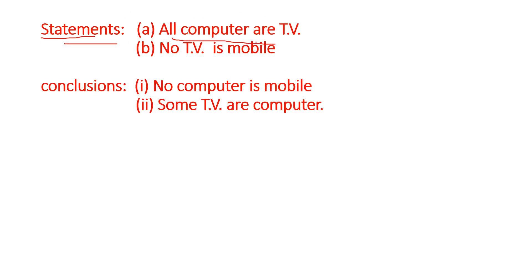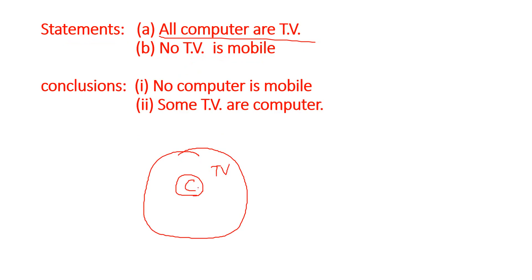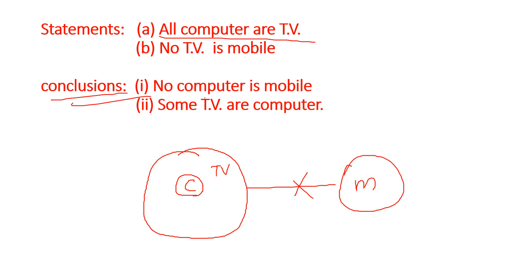Statements are given: All computers are TV; No TV is mobile. First let's draw a Venn diagram. All computers are TV means computers are entirely inside TV. No TV is mobile means TV and mobile have no overlap. Using syllogism rules — already covered in Anacademy and YouTube channel — the first conclusion: No computer is mobile. Is this correct? Since all computers are inside TV, and no TV is mobile, therefore no computer is mobile. Yes, this is right.